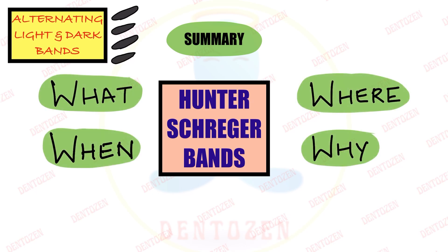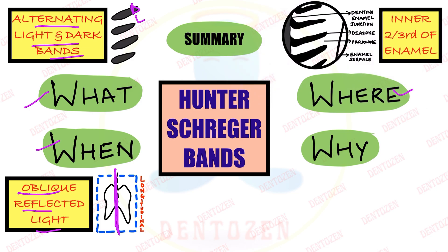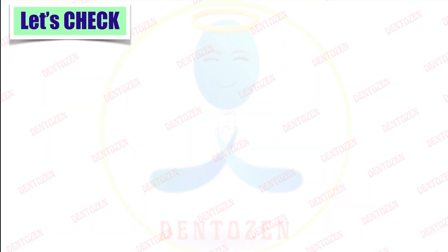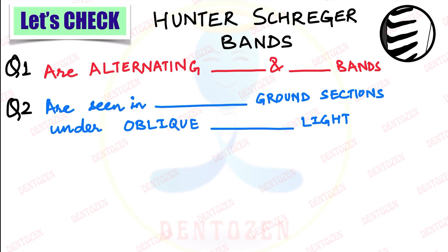Summary of Hunter-Schreger bands — four questions. What: alternating light and dark bands. When: seen in longitudinally cut ground sections under oblique reflected light. Where: seen in the inner two-thirds of the enamel; dark zones are known as diazones and light zones are known as parazones. Why: three reasons, but the most important is the change in direction of enamel rods; others include variations in calcification and differences in organic components. Now let's check what you've learned: Hunter-Schreger bands are alternating — what — and — what — bands?